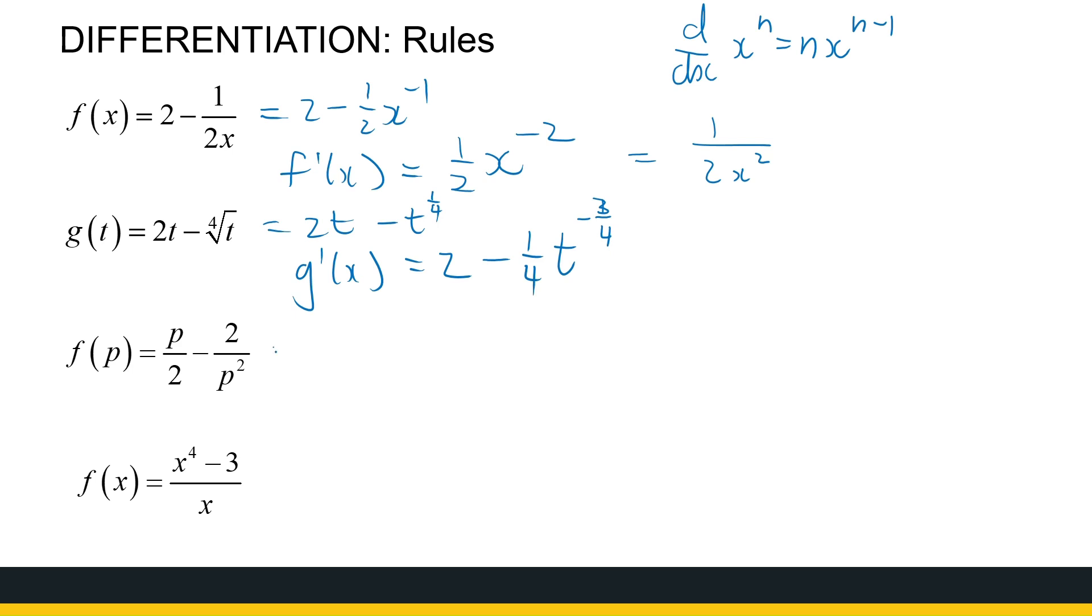All right, next one, we're going to tidy it up first. p over 2. Separate the constants and the variables. So it's a half p minus 2p to the power minus 2. I can find that derivative, a half p to the power 1. The derivative is just a half, times the 1. Reduce the exponent with 1, and I've got p to the power 0, which is just 1, so we stick to a half. Minus 2 times minus 2 is plus 4, p to the power, make the exponent 1 less, minus 3.